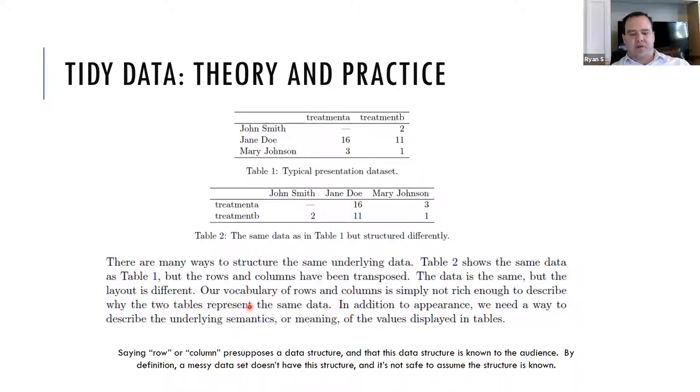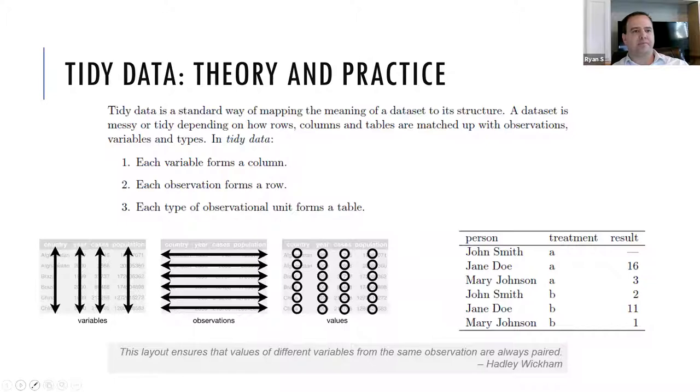So saying row or column presupposes a data structure and that this data structure is known to the audience and by definition, a messy data set doesn't have this structure and it's not safe to assume the structure is known. And maybe when we're working with our colleagues, we've already moved past some of this messiness and so we already have some level of tidy data that we're talking about together. And so then you can say things like row and column because everybody has seen the data set already and it's already assumed a certain structure, but the whole concept or the idea of messy data, part of it is that it could take any form.